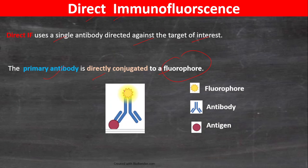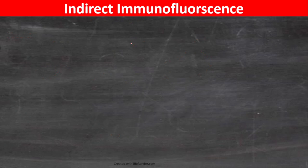As shown in this picture, the fluorophore is directly conjugated to the primary antibody. This fluorophore-conjugated primary antibody binds to our protein of interest. That is why it is called direct immunofluorescence.